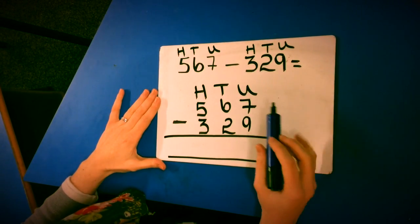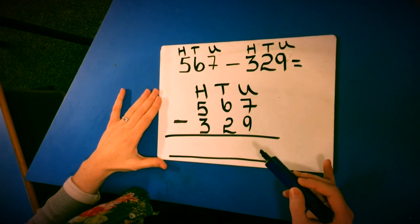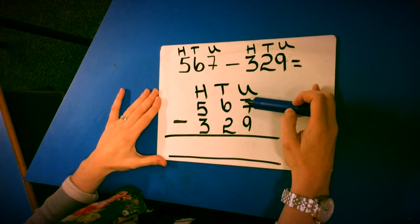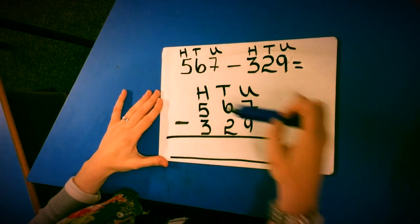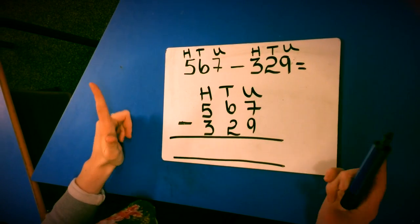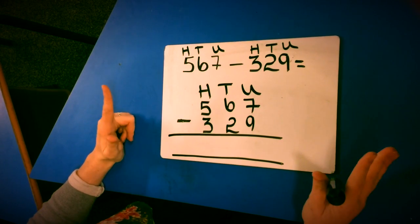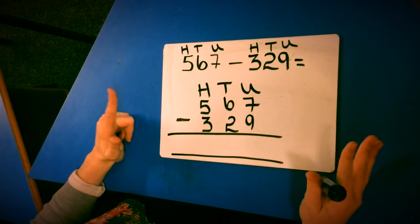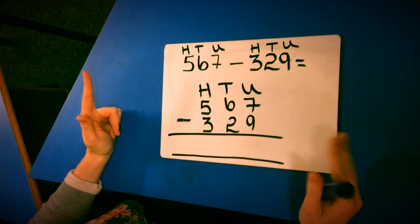So now we've set our calculation up, we can begin with the units and we begin by doing 7 take away 9. Now what I usually say to the children, if I have 7 sweets or 7 pencils, can you take 9 from me? And that really helps them understand.